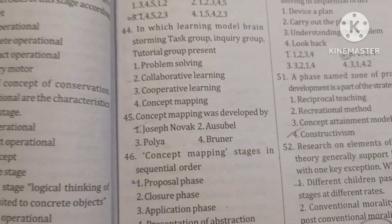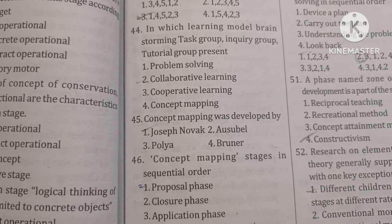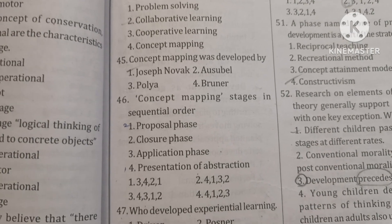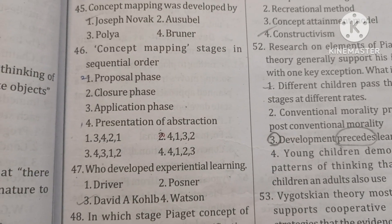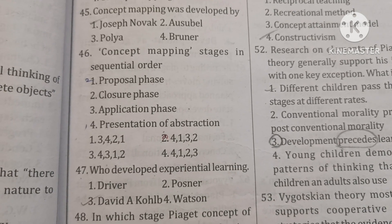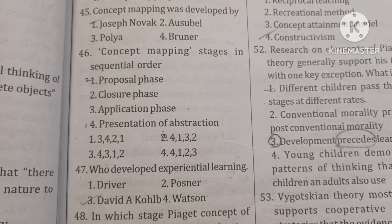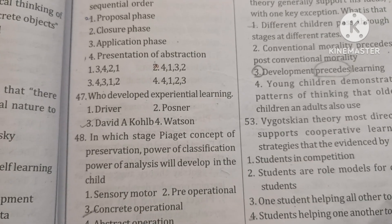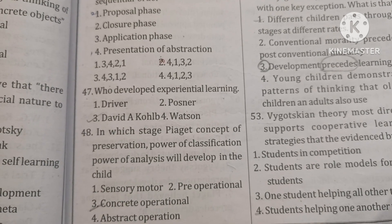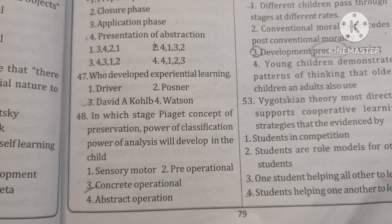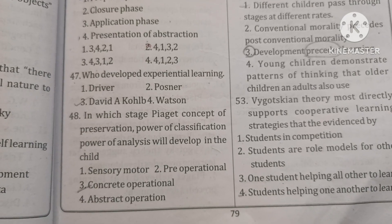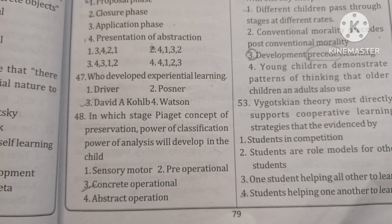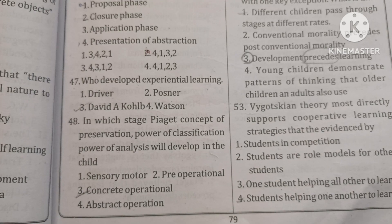Concept mapping was developed by Joseph Novak. Concept mapping stages in sequential order: 1. Presentation of abstraction, 2. Proposal phase, 3. Application phase, 4. Closure phase. Who developed experiential learning? That is Kolb. According to Piaget, the concept of preservation, power of classification, and power of analysis will develop in the child in the concrete operational stage.